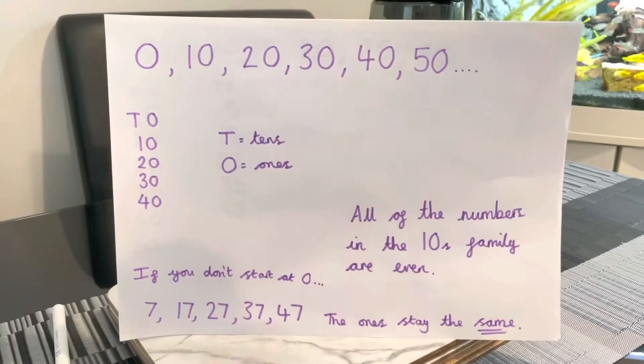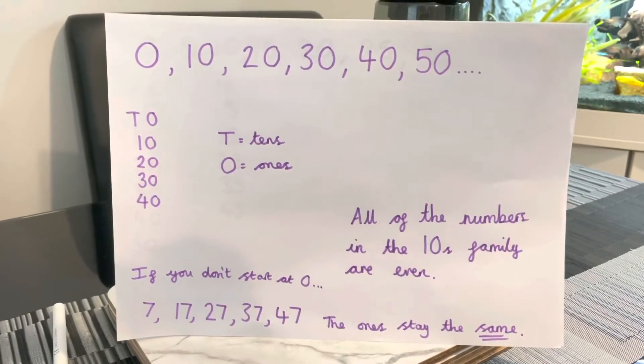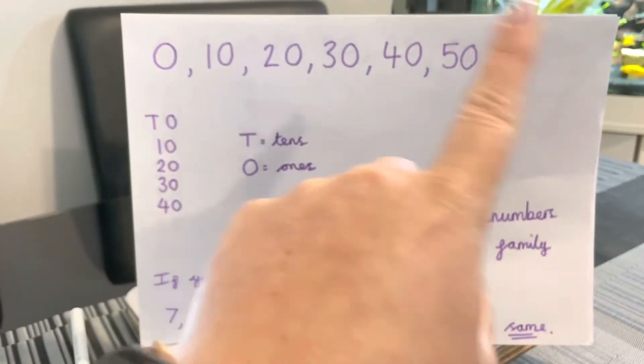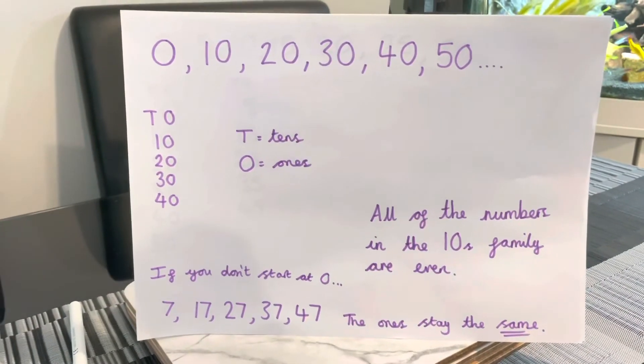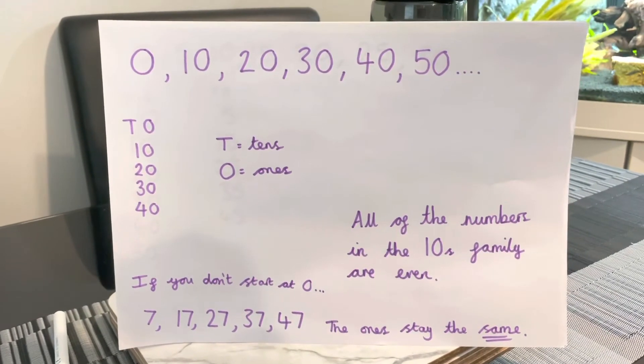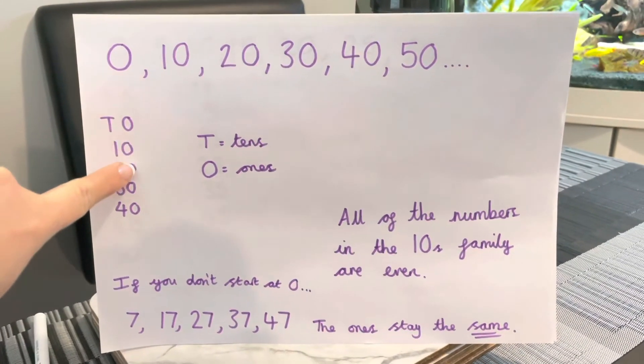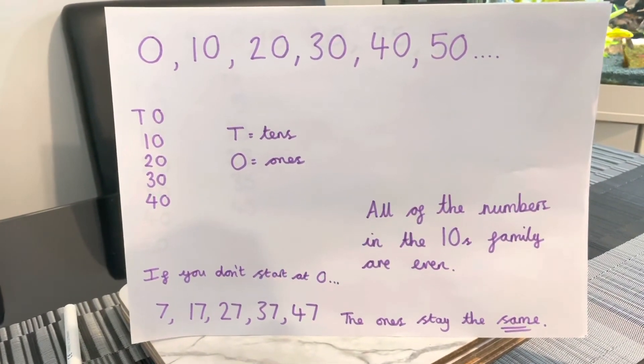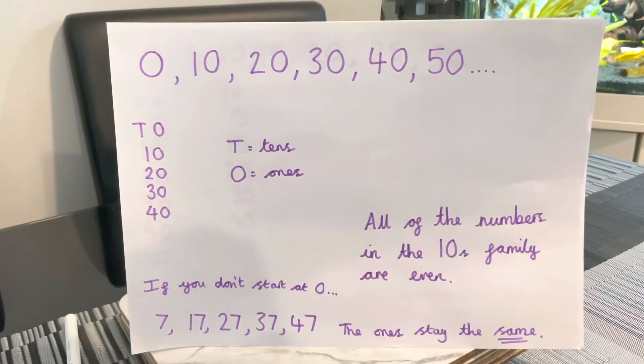So knowing for example that 29 isn't going to appear in the tens family because it doesn't have a zero in the ones column. That might sound a little bit tricky now but don't worry, Ms. Warne is going to explain it. You can see here that Ms. Warne has started counting in tens: zero, ten, twenty, thirty, forty, fifty. The important thing to know when you're counting in tens is that in the ones column you will always have a zero. That's how you know if a number is divisible by ten or if it is in the tens family.